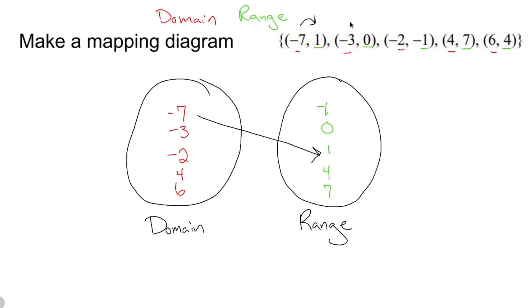Negative three maps to zero, so I'm going to put negative three to zero. Negative two maps to negative one, so I'm going to put negative two mapping to negative one. Four maps to seven, like that. Six maps to four, like that.